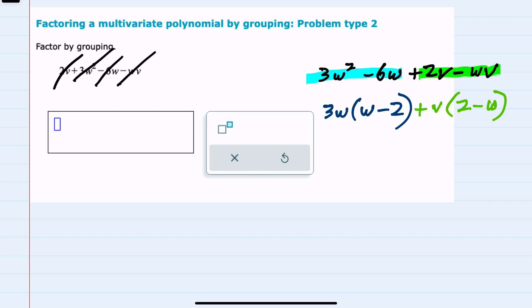And from here, to continue factoring, I need these new factors to be the same. One of them is w minus 2, and the other is 2 minus w. So it's subtraction, but the order is not the same.